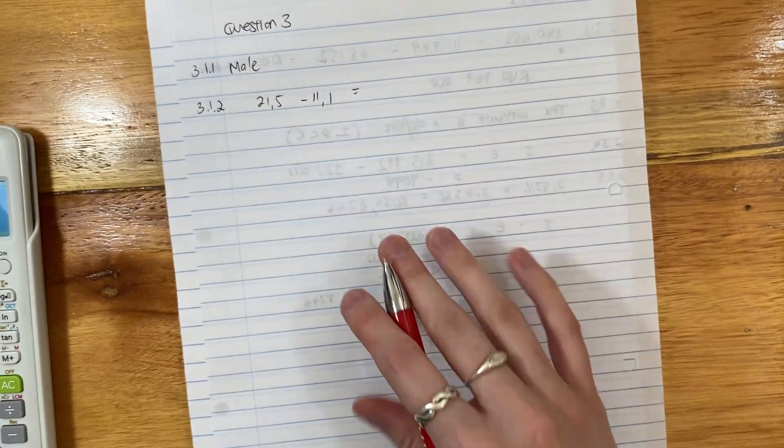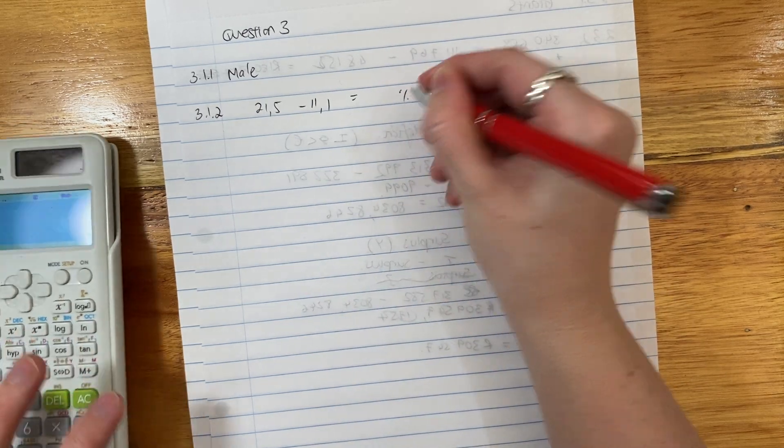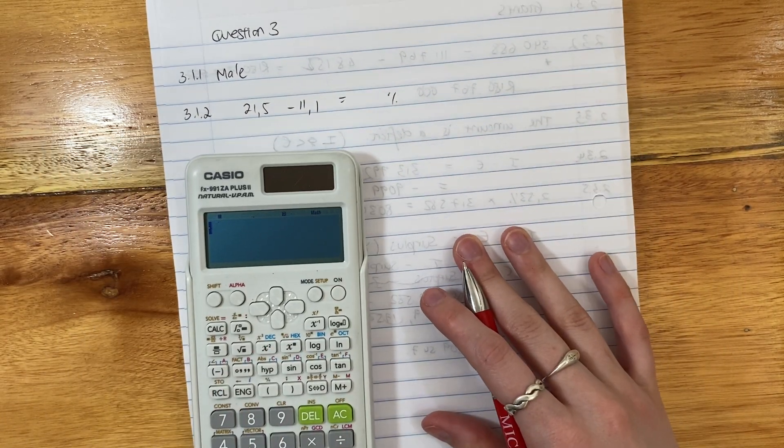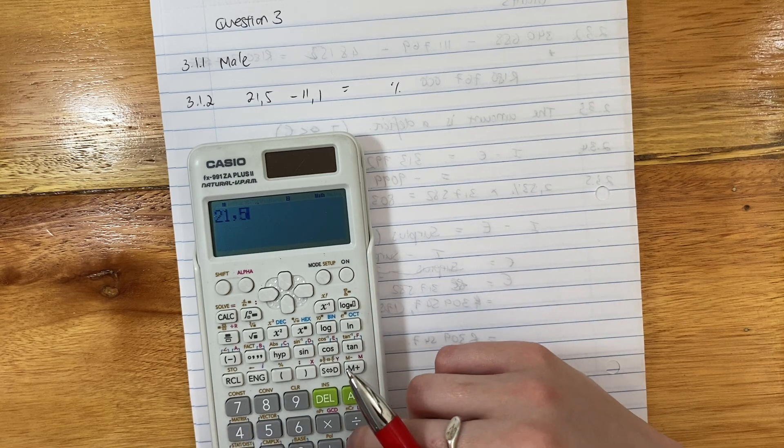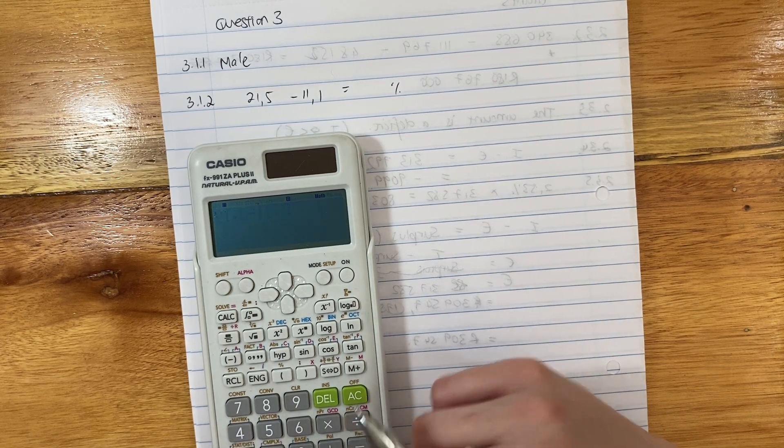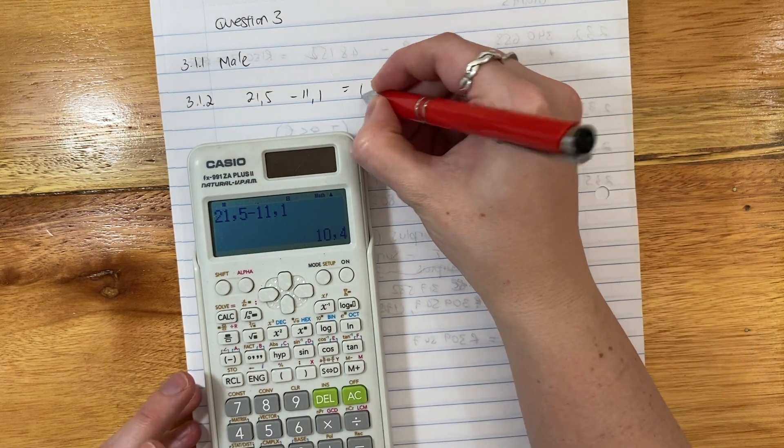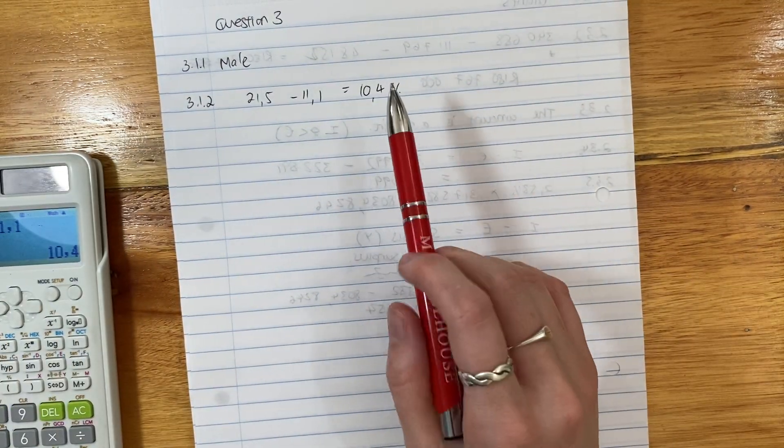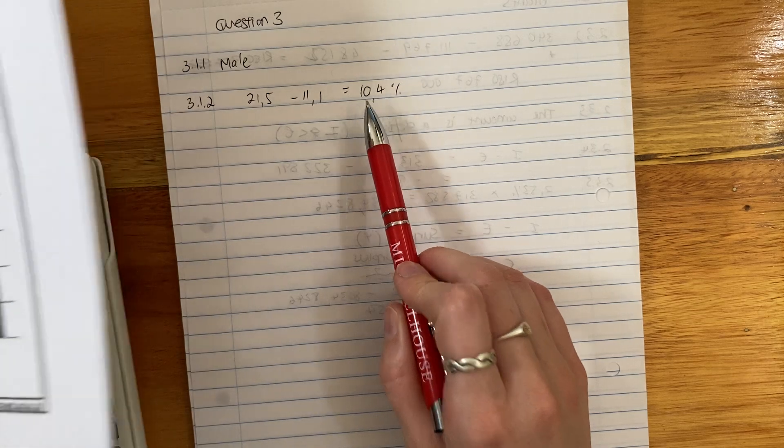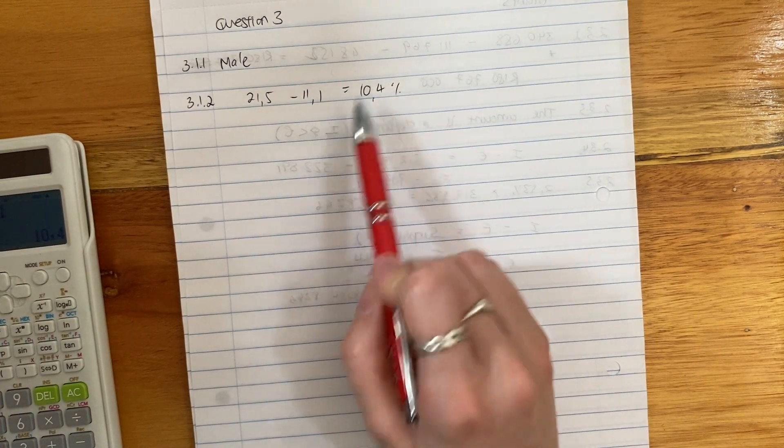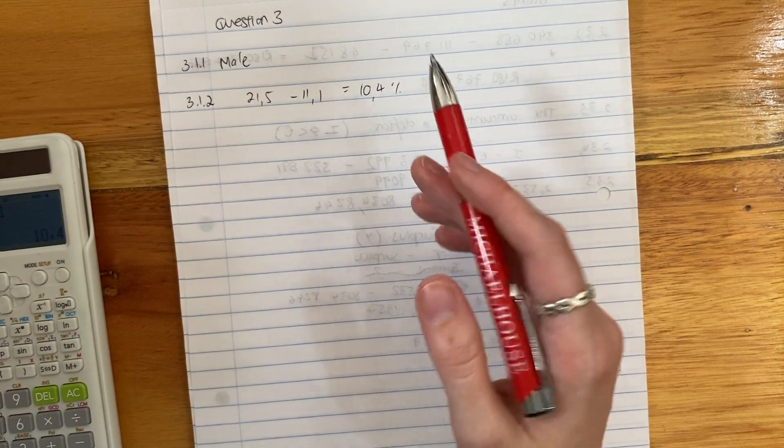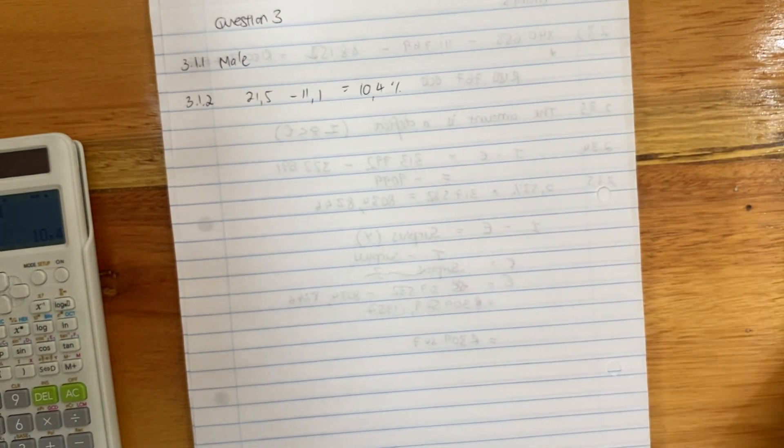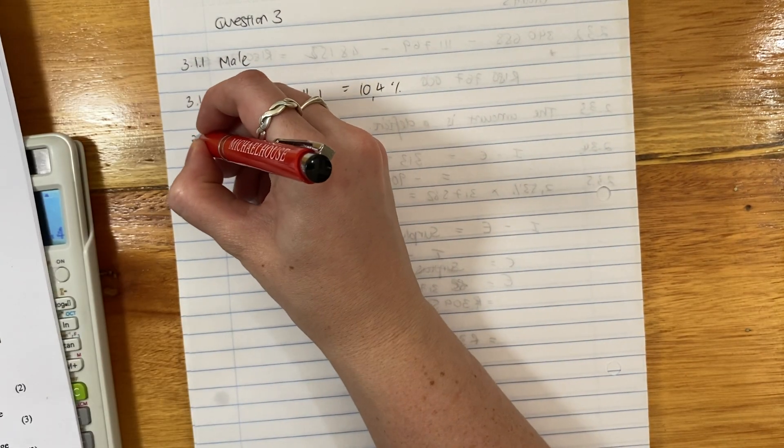These are percentages, so you're going to have to put your answer as a percentage, but you remember you don't have to put units into your equations. It's not needed. So what is the difference? It's 10.4%. Here, if you don't put your percentage sign, you would get a mark off there, right? Because it's important that you actually show what it is that you're talking about.